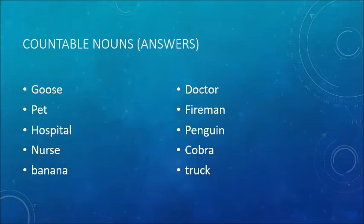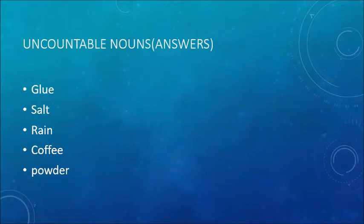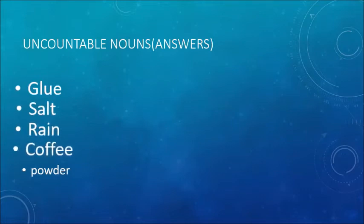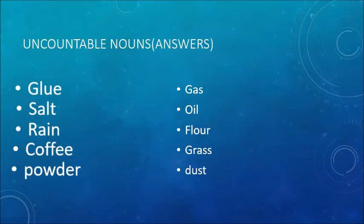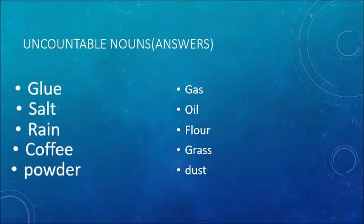Now look at the uncountable nouns: glue, salt, rain, coffee, powder, gas, oil, flour, grass, dust. If you look at these words, you can see that all these nouns are difficult to count in numbers — we can only make a guess or estimation about their quantity. We cannot count them in numbers like countable nouns: 1, 2, 3, 4. I hope you are now quite clear about what are countable and what are uncountable nouns.